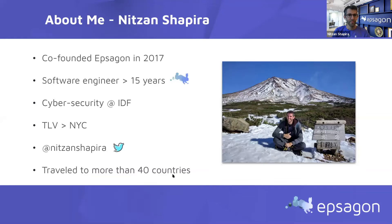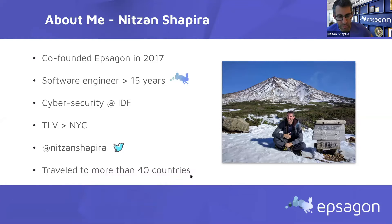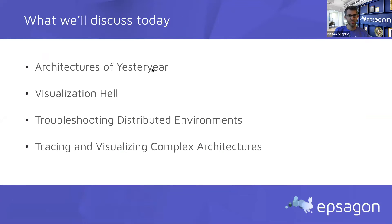A little bit about me. I'm a software engineer by background. I spent a lot of time in the Israeli intelligence unit. In the last three years I've been working at Epsagon, a company which I founded together with Ron Ribbons, my co-founder and CTO. I moved to New York at the beginning of this year. I've traveled to over 40 countries. Let's start.